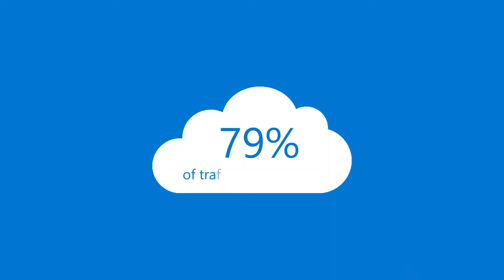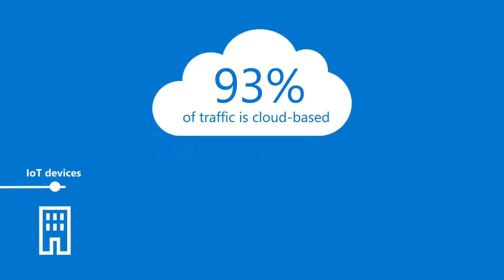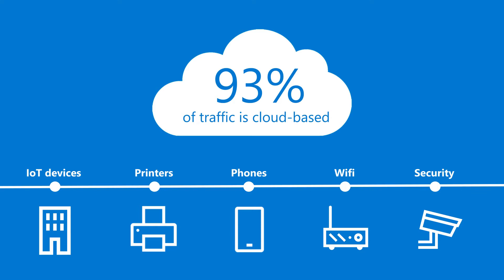I also want to talk about segmentation — what makes it a core part of our security strategy at Microsoft? A lot of what we do with our architecture is accessing things through the internet itself. About 93% of our traffic is cloud-based. You still have devices in your network like IoT devices, printers, Polycom phones — different devices around the hallways — and those are all connected. A good segmentation strategy tries to pull as many of those things into their own segments.